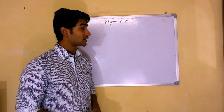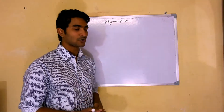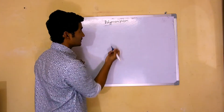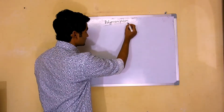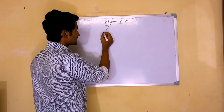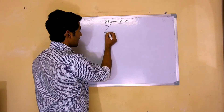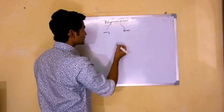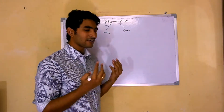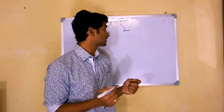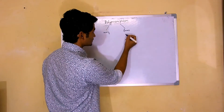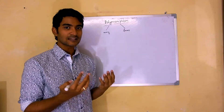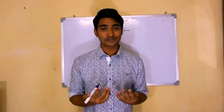If we talk about this word called polymorphism, this is actually a Greek word. If we separate this word, 'poly' has a meaning and 'morphism' has a meaning. So 'poly' means many and 'morphism' means form. So it's actually many forms. You can also say that 'morphism' can be called behavior, so many forms or many behaviors — that is what the word polymorphism means.